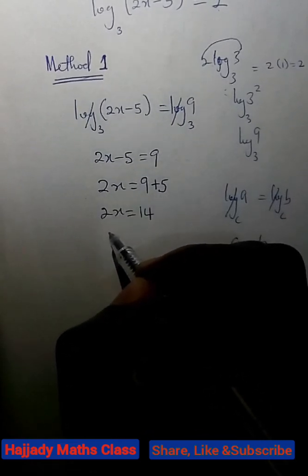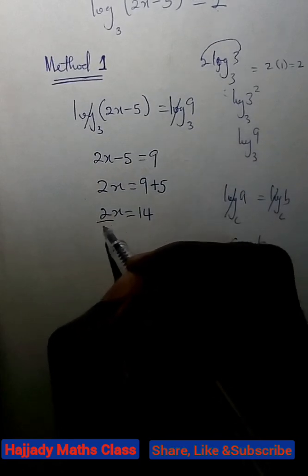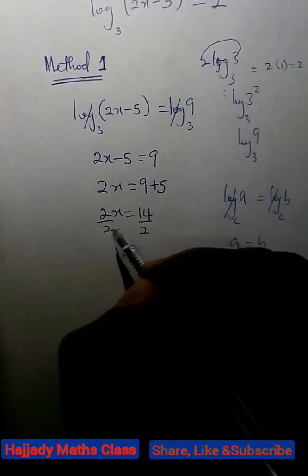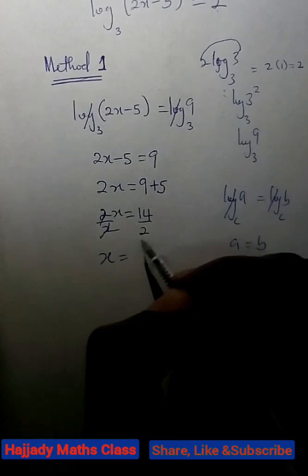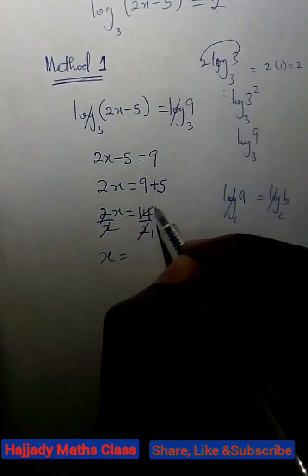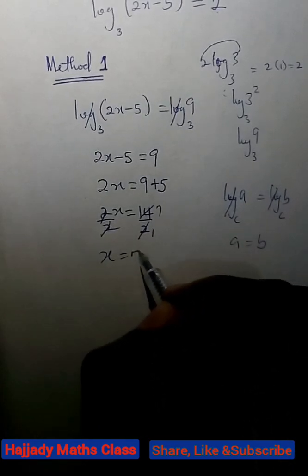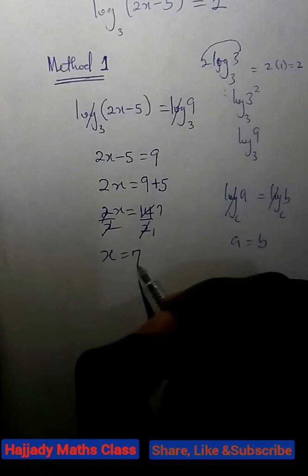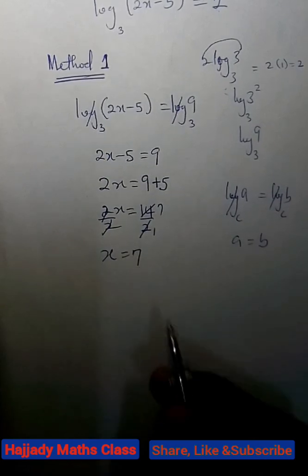Now, dividing both sides by the coefficient of x, which is 2, over 2. 2 cancels out 2, we have x. 2 into 2 is 1. 2 into 14 is 7. Then, x is 7. That is method 1.